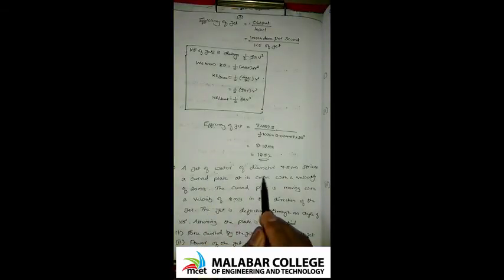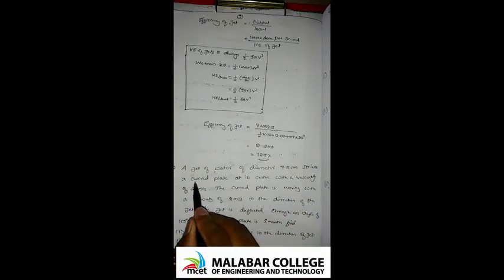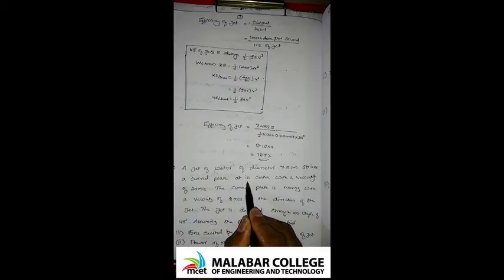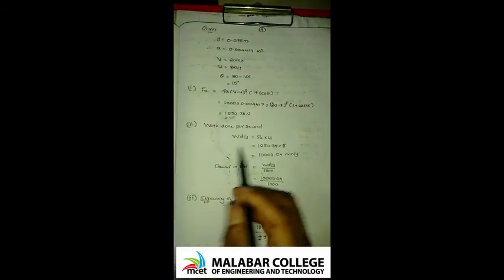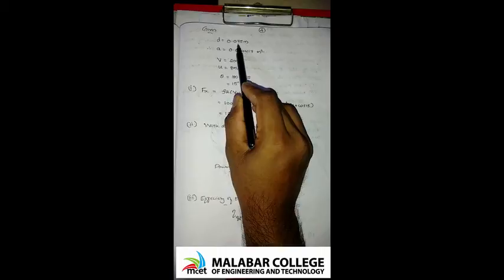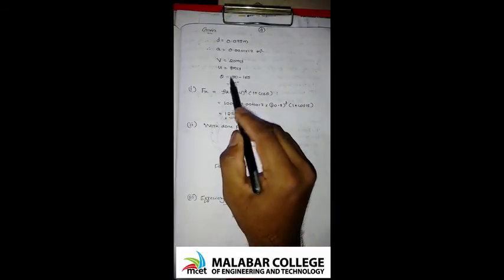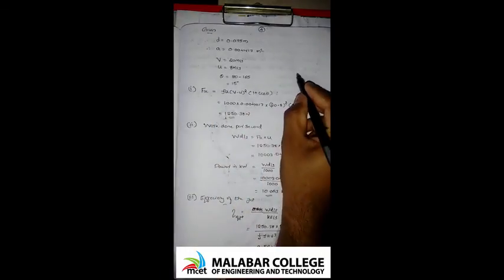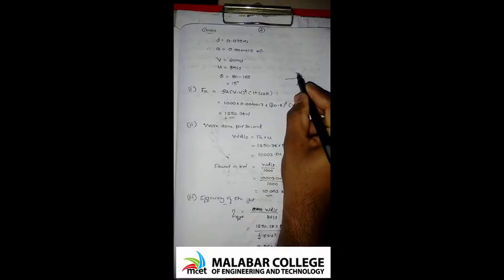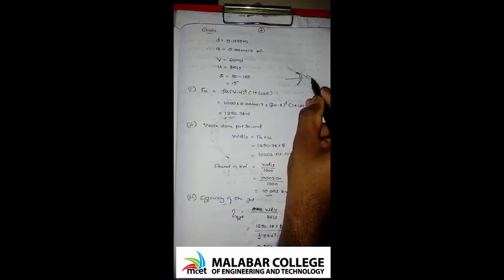A jet of water of diameter 7.5 cm strikes a curved plate. The jet is centered on the plate. We need to find the force exerted by the jet in the direction of the jet (x-direction), the power, and the efficiency. Given: D = 0.075 m, V = 20 m/s, U = 8 m/s, and the angle of deflection is 165 degrees — so theta = 180 − 165 = 15 degrees.